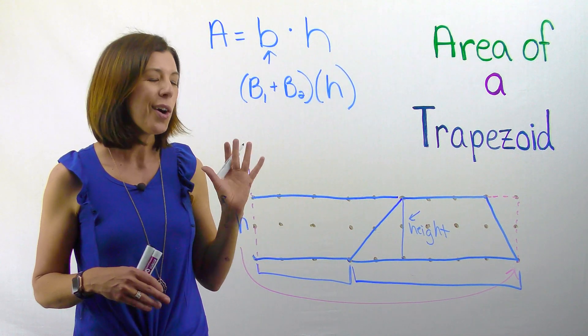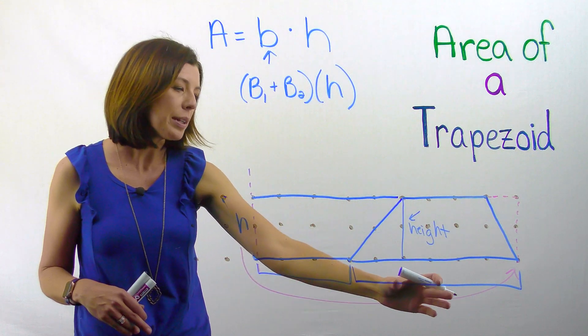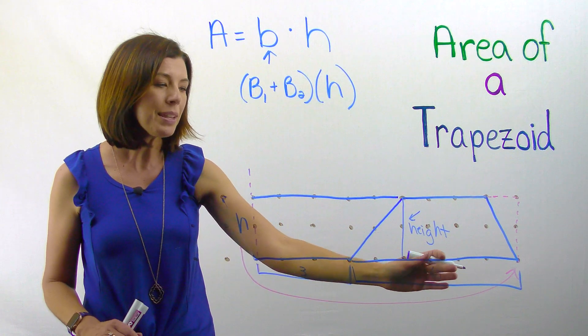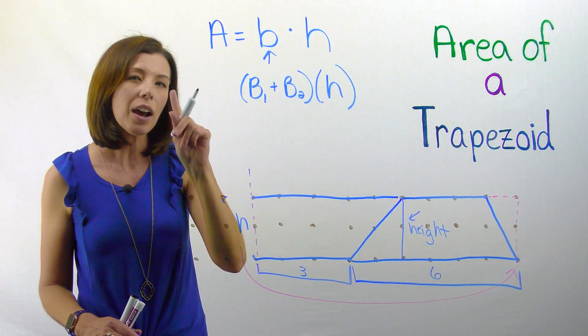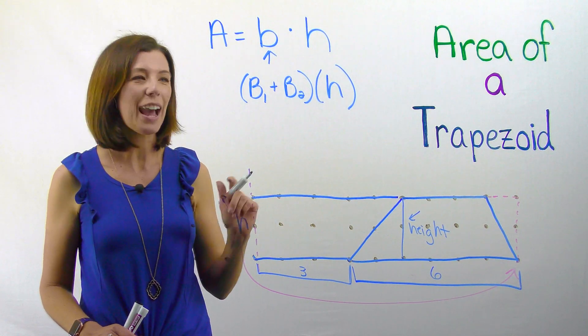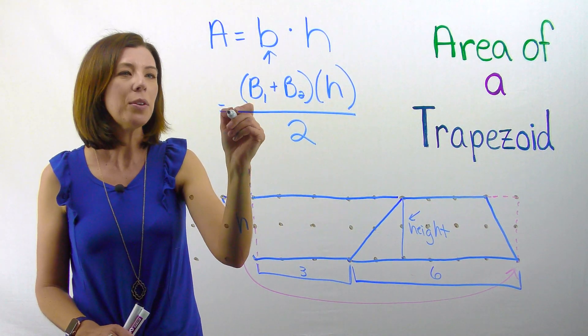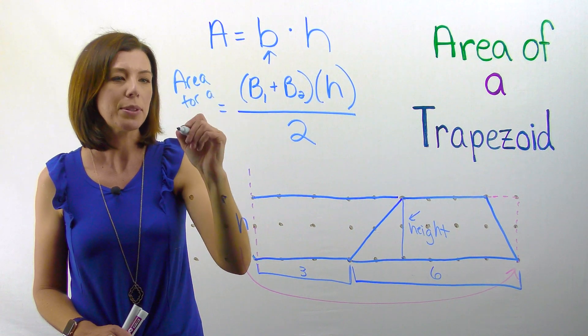Right, okay great, so far so good, only one problem. If I do this math, base one plus base two, so I've got three plus six, that's going to give me nine, times two is going to give me eighteen. Is that really the area of just one trapezoid? No. I need to still take half of that, right? So I need to take all of this and divide by two in order to find the area for a trapezoid.